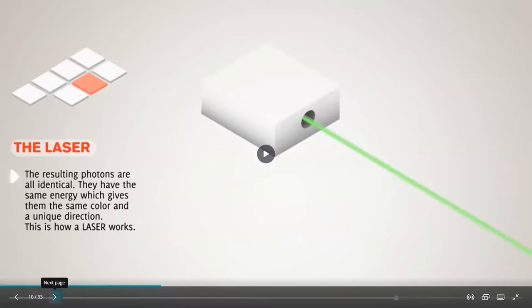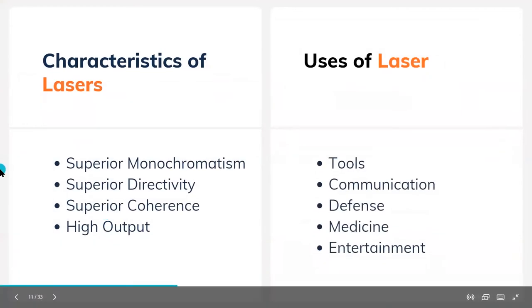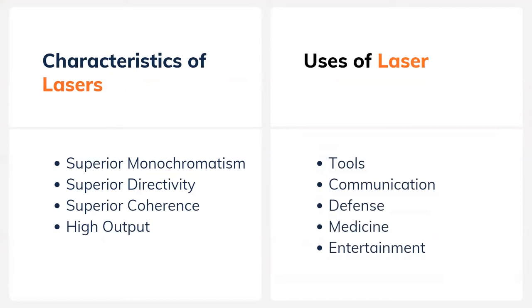Now let's look at the characteristics of a laser: coherence, directivity, monochromatism, high output, diffusibility, brightness, directionality, and intensity. Monochromatism means all beams emitted by the laser have the same wavelength or color. Directivity means the beams are focused in one particular direction. Coherence means all photons emitted have the same wavelength and frequency. Brightness and diffusibility are also characteristics of laser.